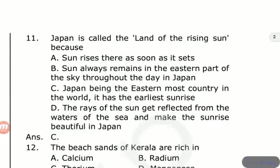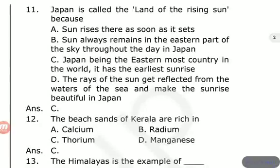Japan, being the easternmost country in the world, has the earliest sunrise. The beach sands of Kerala are rich in — the options are Calcium, Radium, Thorium, and Manganese. The beach sands of Kerala are rich in Thorium.